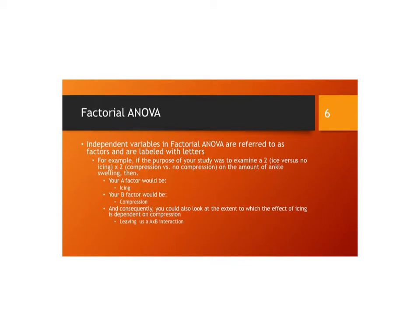Independent groups variables in factorial ANOVAs are often referred to as factors and are labeled with letters. For example, if the purpose of your study is to compare ice versus no ice by compression versus no compression on the amount of ankle swelling, then your A factor would be icing and your B factor would be compression. Consequently, you would then label the extent to which icing is dependent on compression, or your interaction factor, an A by B interaction.